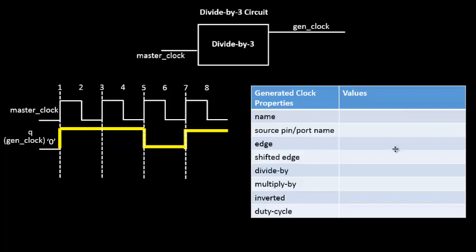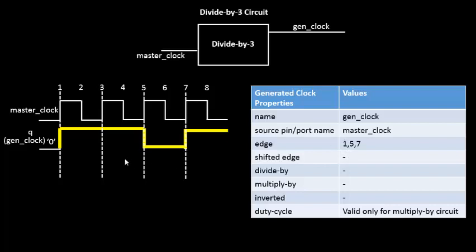This particular relationship fills up the property table as follows: the generator clock is called gen_clock, the source is master_clock, and the edges define the clock. The first rising edge of gen_clock arrives at the first edge of master_clock, the first falling edge arrives at the fifth edge, and the second rising edge of gen_clock arrives at the seventh edge of master_clock.